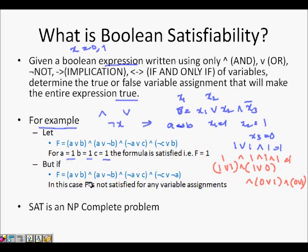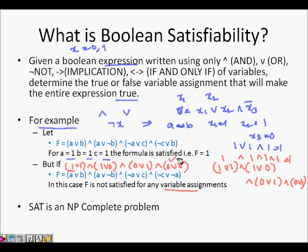However, if we have a different expression, f is not satisfied for any variable assignment. In this case, f cannot be satisfied using any variable. For example, if a=1, b=1, c=1: 1 OR 1, AND with (1 OR 0), AND with (0 OR 1), AND with (0 OR 0) — this expression gives us 0. All others are 1 but because we are ANDing we get 0, so this is never going to be satisfied.